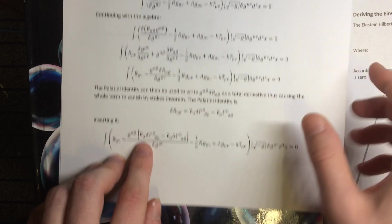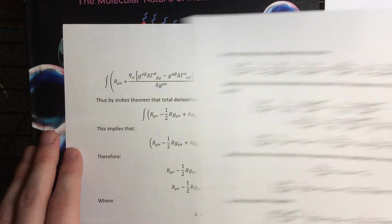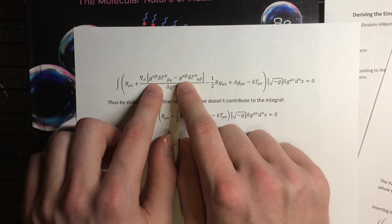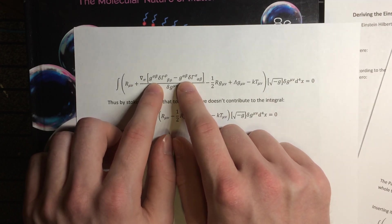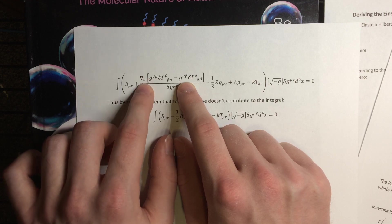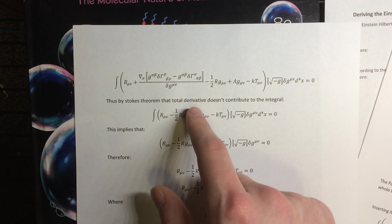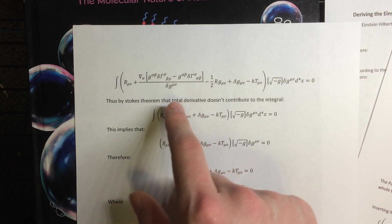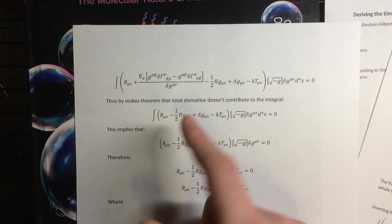Now the interesting thing is that once you do the index juggling, then you can actually factor out this covariant derivative, which allows you to write this whole thing in terms of a 4 divergence, which is a total derivative, so it works.